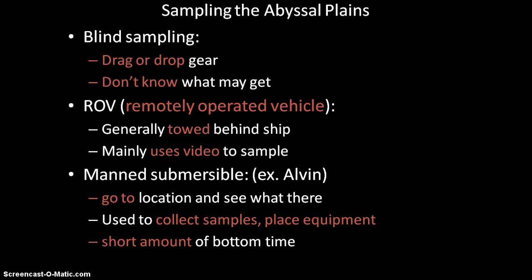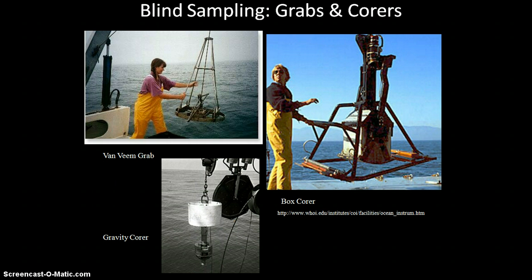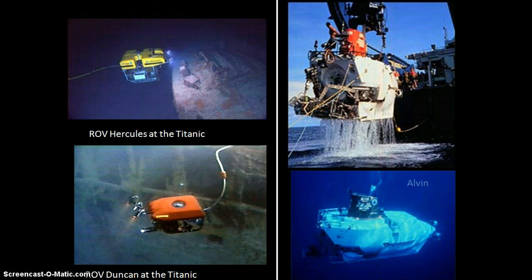The problem with manned submersibles is you don't get very much bottom time because it takes a long time to get down there. Blind sampling techniques include dredges and sleds — the anchor dredge and epibenthic sled are dropped to the bottom, pulled, and whatever's there comes up. There are also grabbers and corers that take a core of the seafloor or grab a handful to see what's there. Pictures show ROVs Hercules and Duna at the Titanic wreck, and the manned submersible Alvin, which can go all the way to the seafloor.